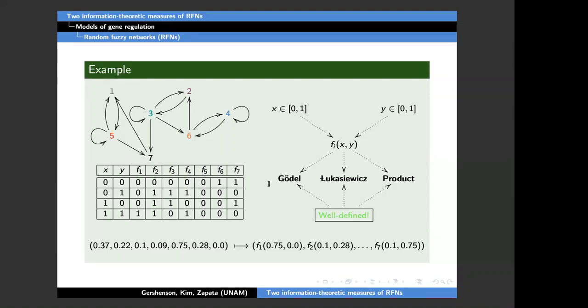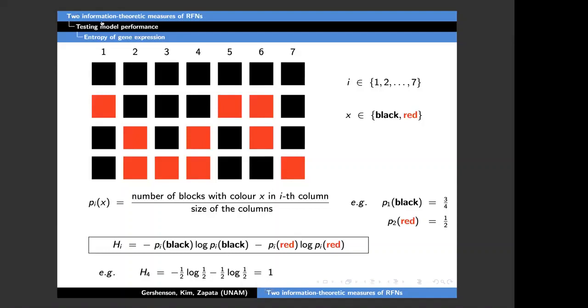Now I will explain how we test the model performance. We measure the entropy on a series of states. So here I have one, two, three, four states of gene expression. Each column represents a gene, a single gene. So we have seven genes. The first state is at the top. The last state is at the bottom. In the first state, all the genes are not expressed. Then in the next state, the first gene is expressed. The second gene remains not expressed and so on. Here I'm again making this identification. I represent zero as black and one as red. Here I'm explaining only the binary case, but this can be extended to the multi-valued or fuzzy case.